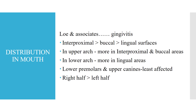The distribution of gingivitis in the mouth: it will be more in interproximal than buccal than lingual surfaces. In the upper arch, more in interproximal and buccal areas; in the lower arch, more in lingual areas. The lower premolar and upper canine are least affected. The right side is more affected than the left side.